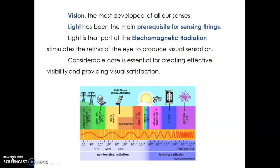To have a proper vision, lighting is so important. Electromagnetic radiation has seven types which includes radio waves, microwaves, infrared, visible light, X-rays, UV rays, and gamma rays. We have this visible light which is a very very small segment of the electromagnetic radiation that is helping us in viewing everything around.